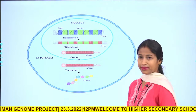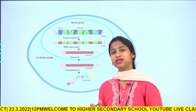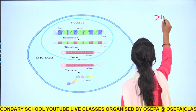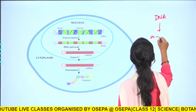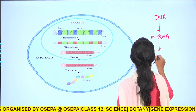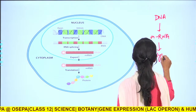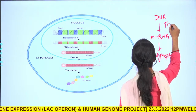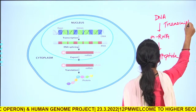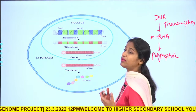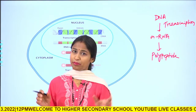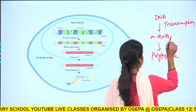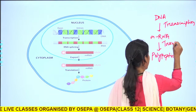We have already discussed the central dogma of molecular biology. The dogma says the DNA gives rise to a copy of mRNA or any RNA, then it gives rise to a copy of polypeptide. This is transcription — the process of synthesis of RNA from a segment of DNA. The process of synthesis of polypeptide from mRNA is called translation.